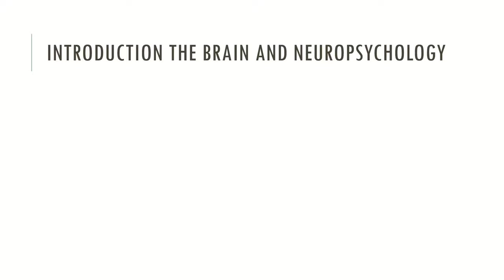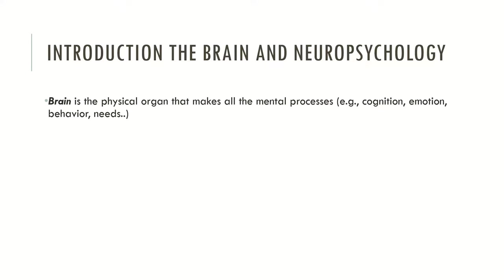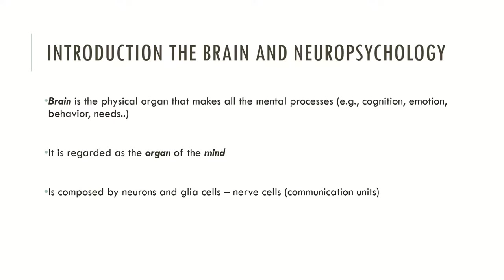Now let's see what the brain is and how neuropsychology and neuroscience regard it. The brain is the physical organ that makes all mental processes available or possible — including cognition, emotion, behavior, psychological needs, and interpersonal relationships. Neuropsychology and neuroscience regard the brain as the organ of the mind. The brain is composed of neurons and glial cells, described as nerve cells and the fundamental units of the nervous system.